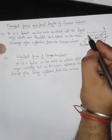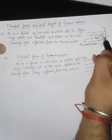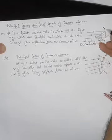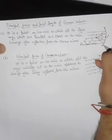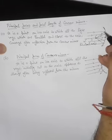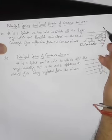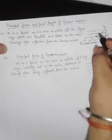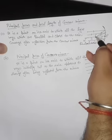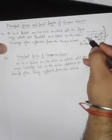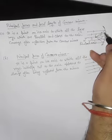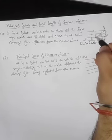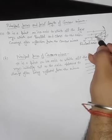Light rays coming from infinity, parallel to the principal axis, after reflection from the concave mirror — after striking the concave mirror they converge after reflection. The point where light rays coming from infinity parallel to the principal axis converge after reflection from the mirror is called the principal focus.